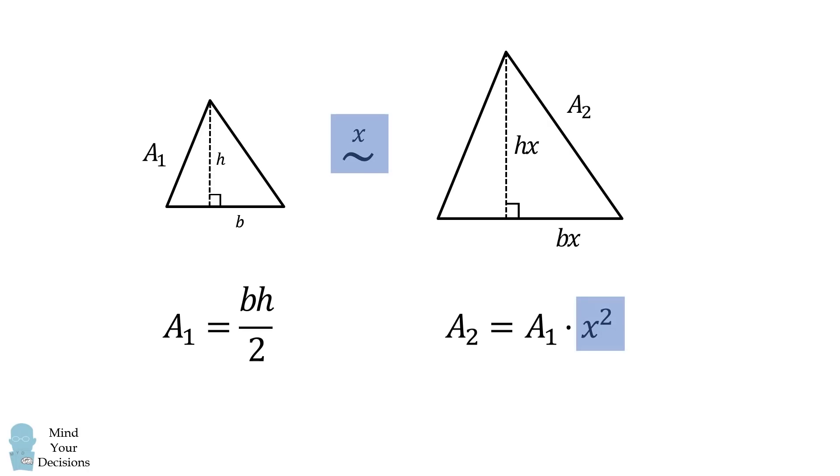So if the sides are in a ratio of x, their areas will be in a ratio of x squared, and thus we've proven this.